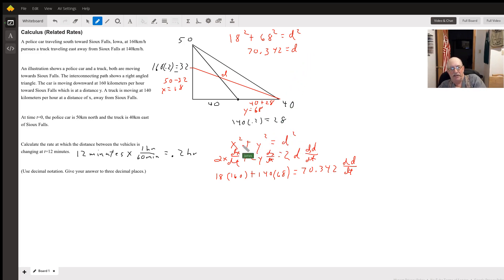Then we have our equation x squared plus y squared equals d squared, Pythagorean theorem. We do the derivative of that and we get 2x times dx/dt plus 2y times dy/dt equals 2d dd/dt. Well I just divided everything by two just to get rid of them.